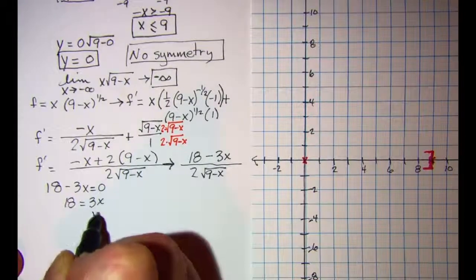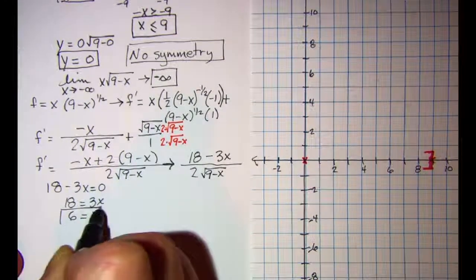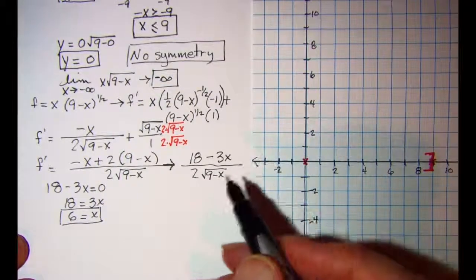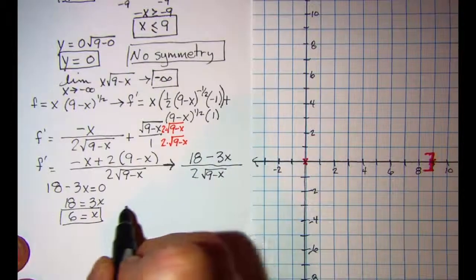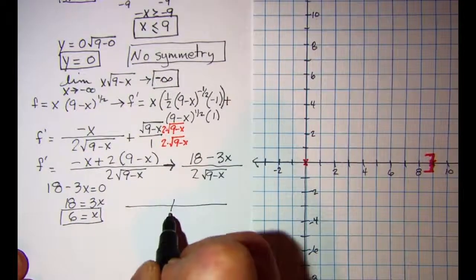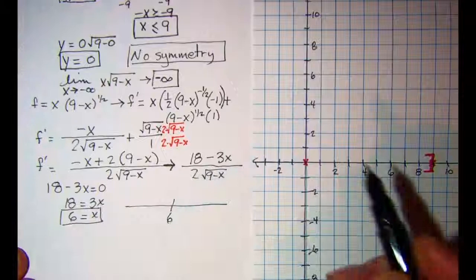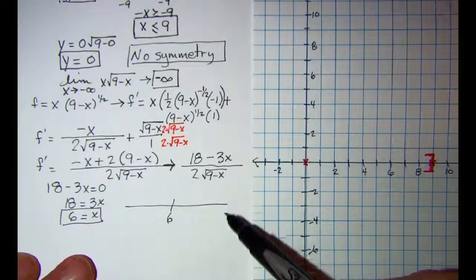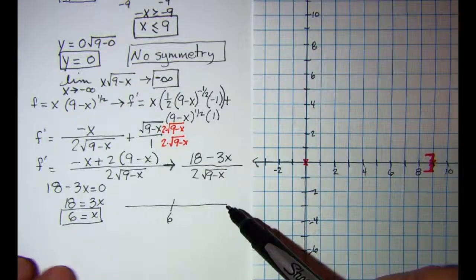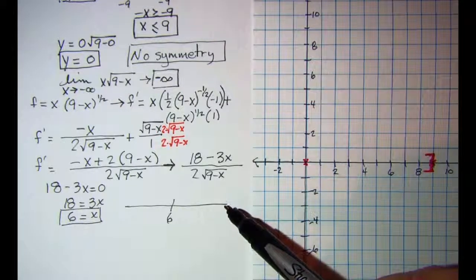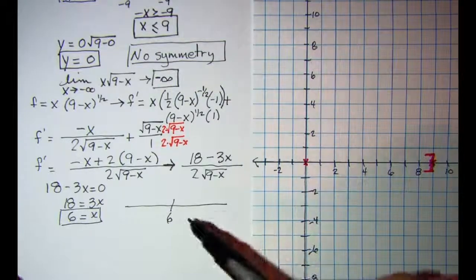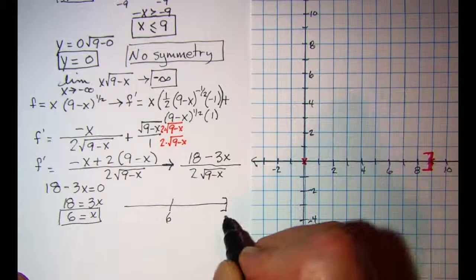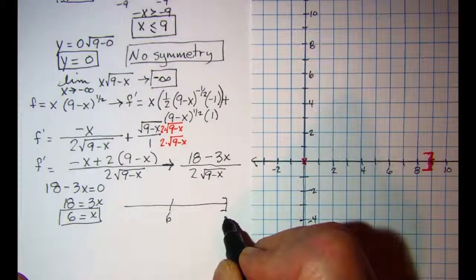So 18 equals 3x and x equals 6 is a critical number. I also have a critical number at 9 but I'm not going to have anything on the right side of 9 since my domain is restricted. So I'm just going to check assuming that my domain goes less than or equal to 9.